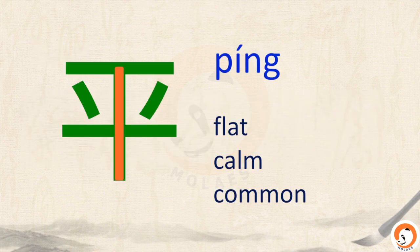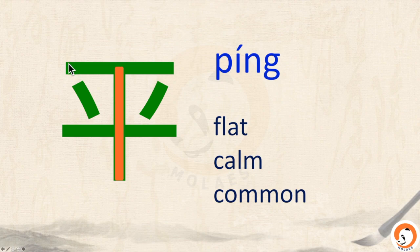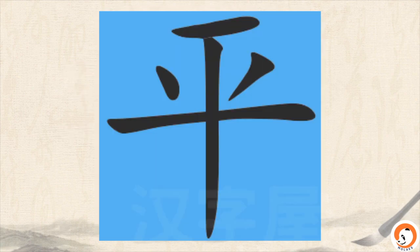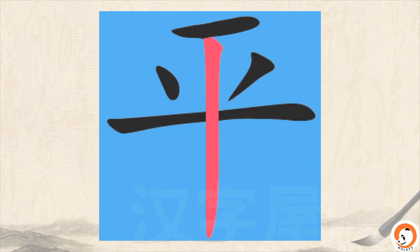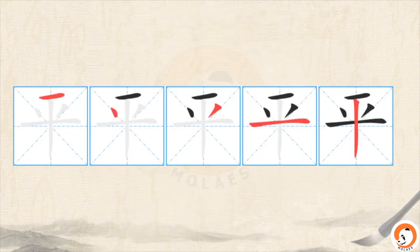平 means flat, calm, and common. 平. This character is very similar to 半 — half. We can imagine that this is the surface; it looks really flat, so it means flat and calm. 平. Let's look at how to write it: 一, 二, 三, 四, 五 — 平, five strokes. Let's practice together: 一, 二, 三, 四, 五. 平, flat.